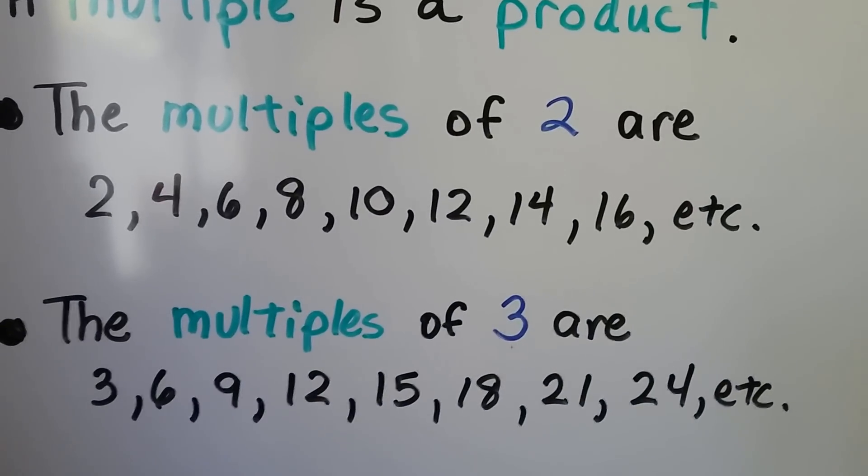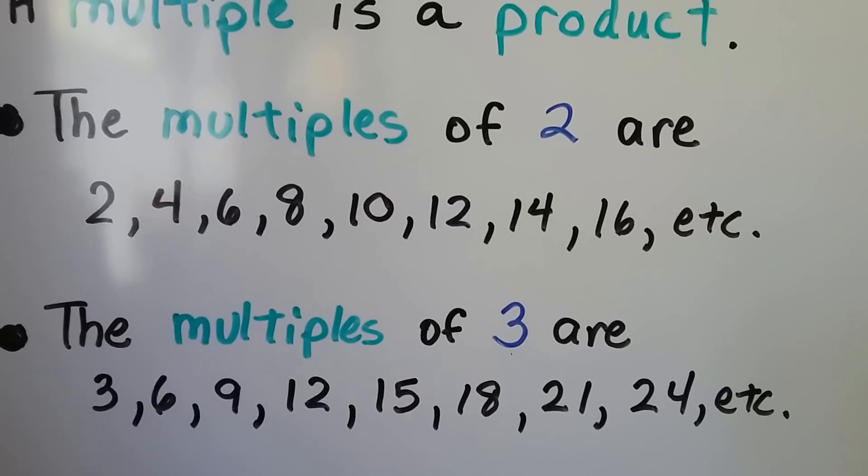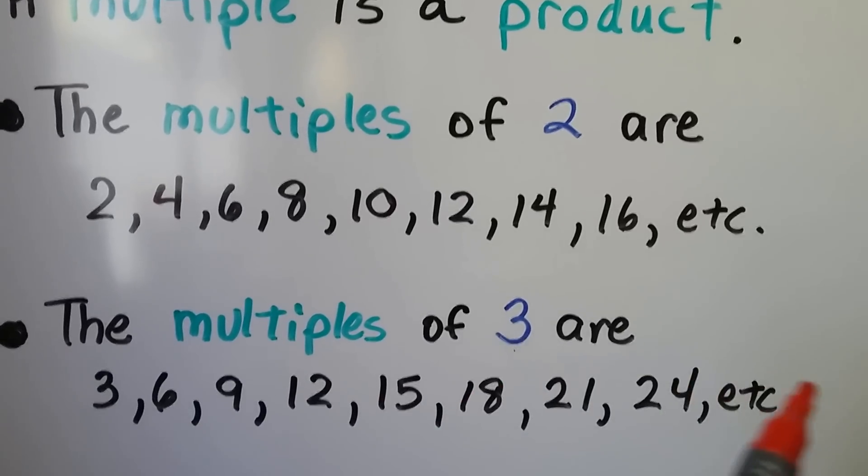And the multiples of 3 are 3, 6, 9, 12, 15, and we could keep going, skip counting by 3.